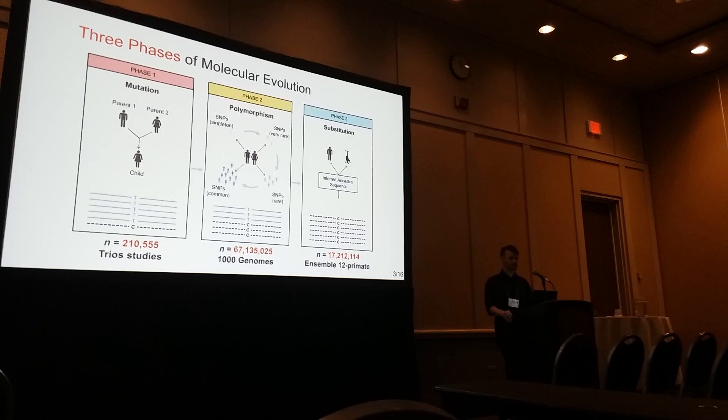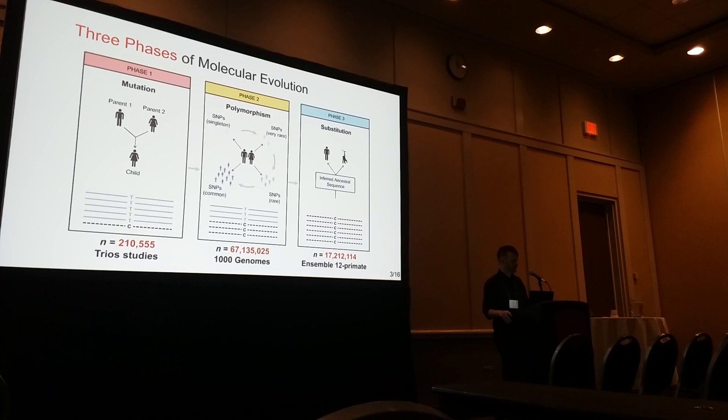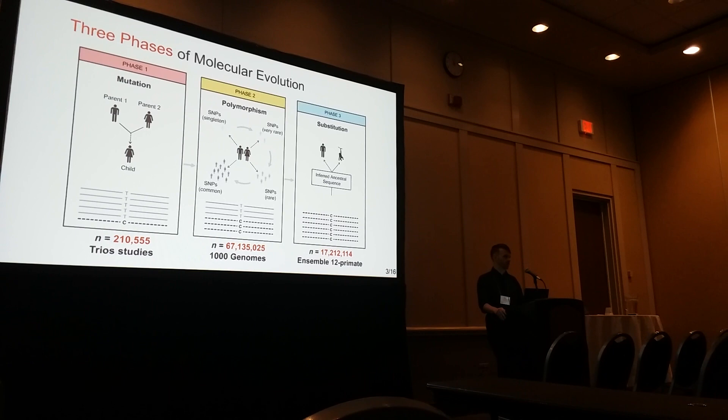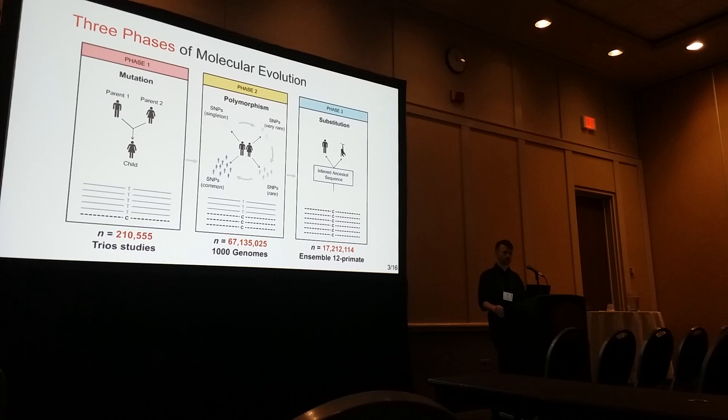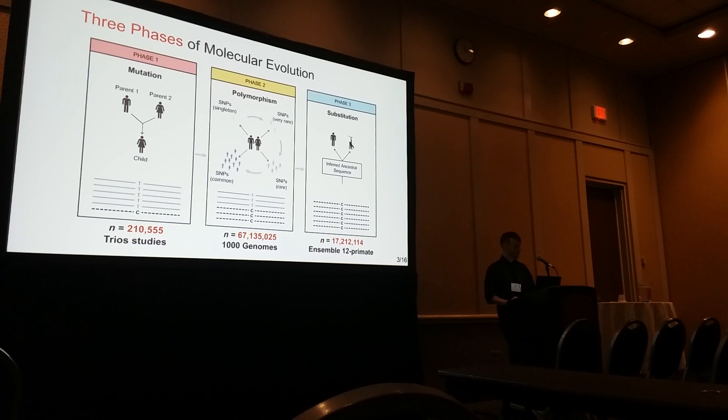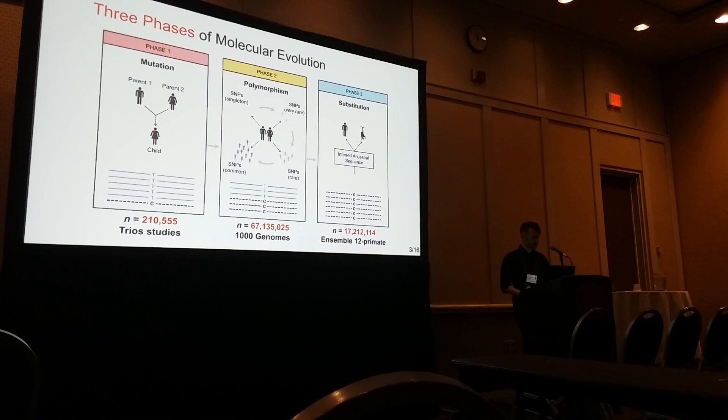We were inspired to re-examine these fundamentals by the publication of some new datasets from the last few years involving trios — mother, father, offspring trios that were all whole-genome sequenced in order to determine empirically the new mutations that occur every generation. We obtained 210,000 de novo mutations from five different studies, studies that were not focused on diseased individuals preferentially.